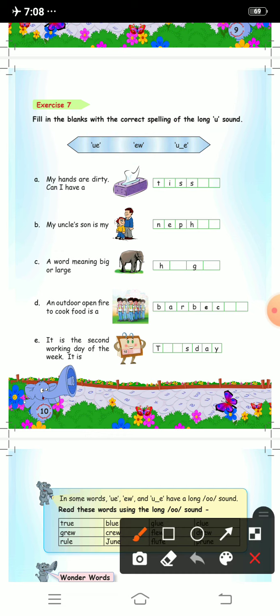First one is my hands are dirty, can I have a what? Tissue. So you will write t-i-double-s u e, tissue. Second one: my uncle's son is my nephew. N-e-p-h-e-w. It is long u sound.